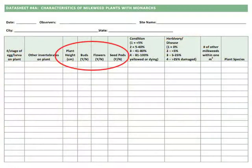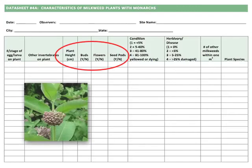You'll also record the species and height of the plant, and note the presence or absence of buds, flowers, and seed pods.